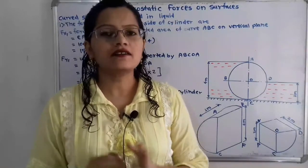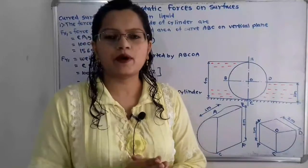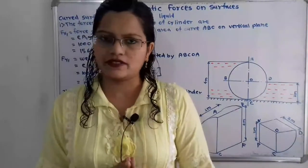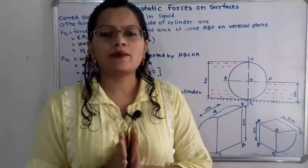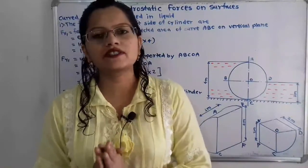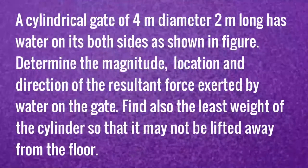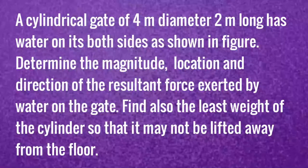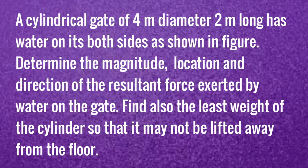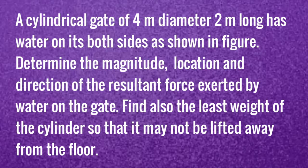Hello friends, this is Priyanka. Today we are going to solve a problem on hydrostatic forces on surfaces. In this video we are going to solve a problem about a curved surface submerged in liquid. A cylindrical gate of 4 meter diameter and 2 meter long has water on its both sides as shown in the figure. Determine the magnitude, location, and direction of the resultant force exerted by the water on the gate. Find also the least weight of the cylinder so that it may not be lifted away from the floor.